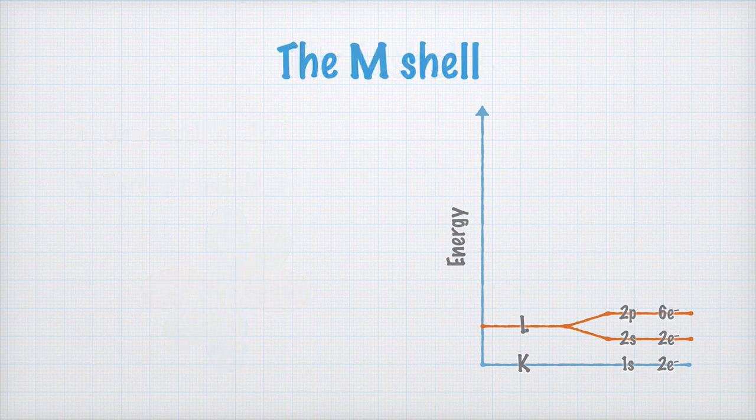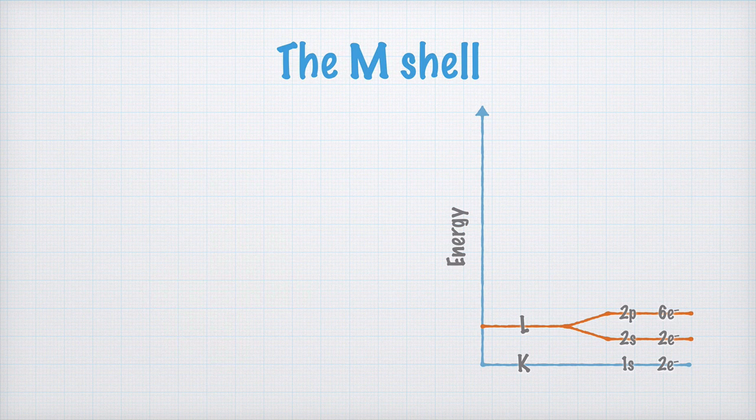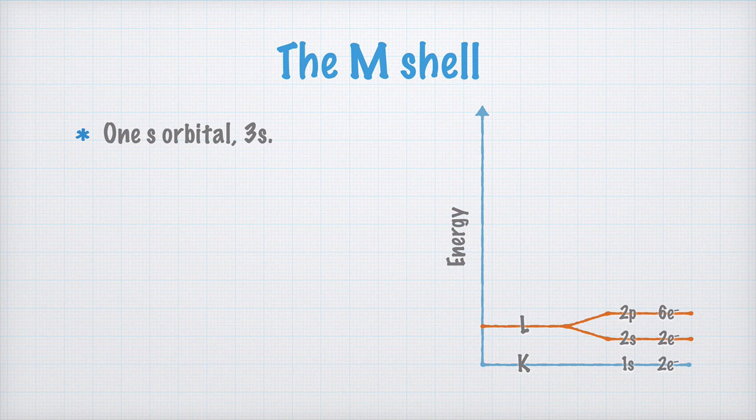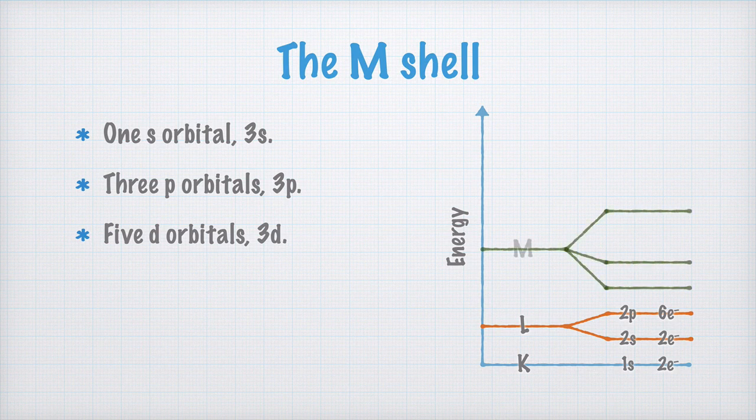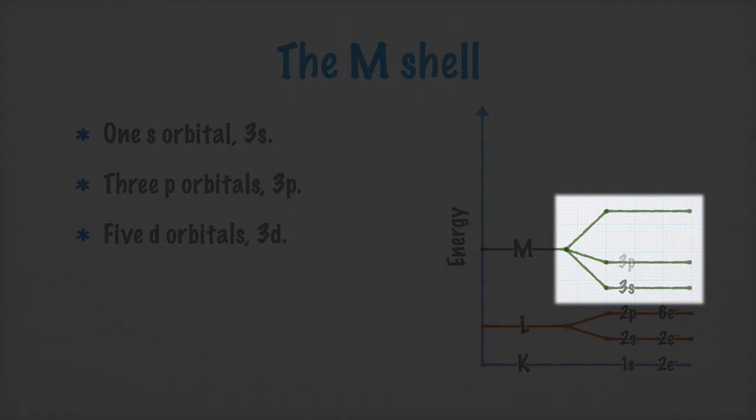Next, we move up to the M-shell, which contains orbitals on three different energy levels. There's one s orbital, called 3s, and 3p just like in the L-shell. There are also 5d orbitals, called 3d. In the diagram, we draw the energy levels like this, and please note the gap between the 3p and 3d orbitals.